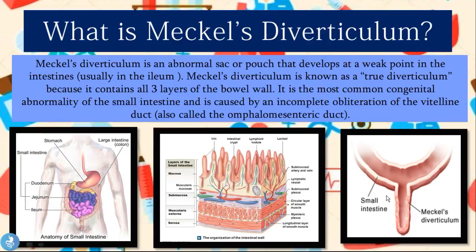Looking at the actual image of Meckel's Diverticulum, it is a small pouch that develops abnormally from the small intestine. It is a remnant of an incomplete obliteration of the omphalomesenteric duct, and in this picture you can see that it contains all those layers of the small intestine wall.